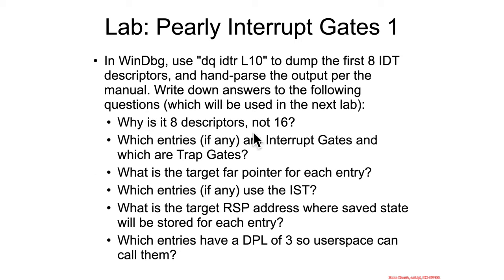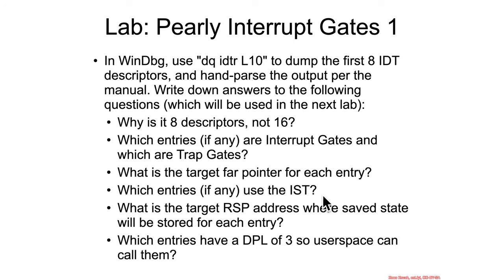Why is l10 eight descriptors? Are there any interrupt gates versus trap gates? Which entries are interrupt gates, which are trap gates? What is the target far pointer for each entry? Which entries, if any, use the IST? What is the target RSP based on each of these?